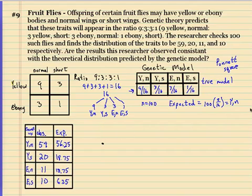Let me move this little stray mark out of the way. And let's set up our null. Let's change colors. So our null is the genetic model is correct.